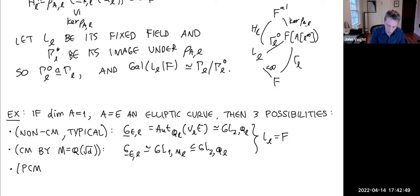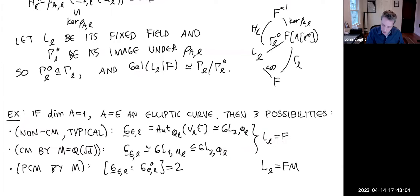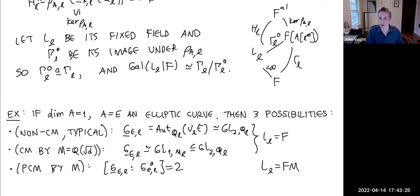In the PCM case, the required extension L_ℓ is exactly F(M), where M is some quadratic extension of Q. This field L_ℓ coincidentally is obtained by adjoining a square root of d. So the notation PCM (or PQM for potential quaternionic multiplication) distinguishes between these cases. The field of definition of the endomorphisms makes a huge difference, even for elliptic curves.